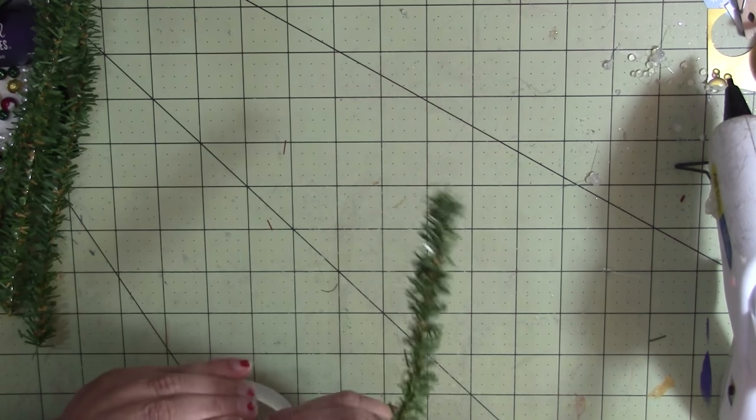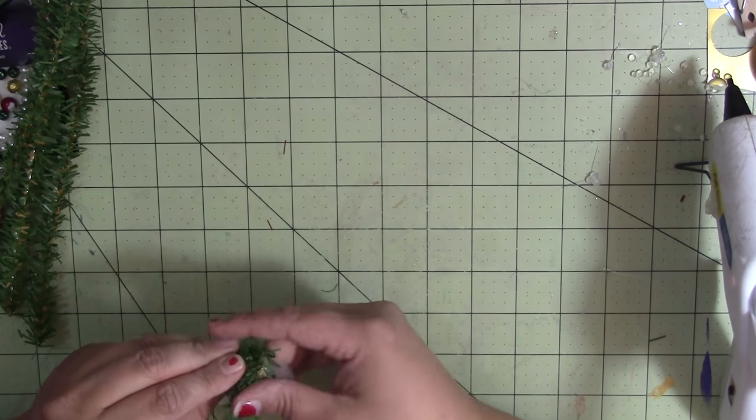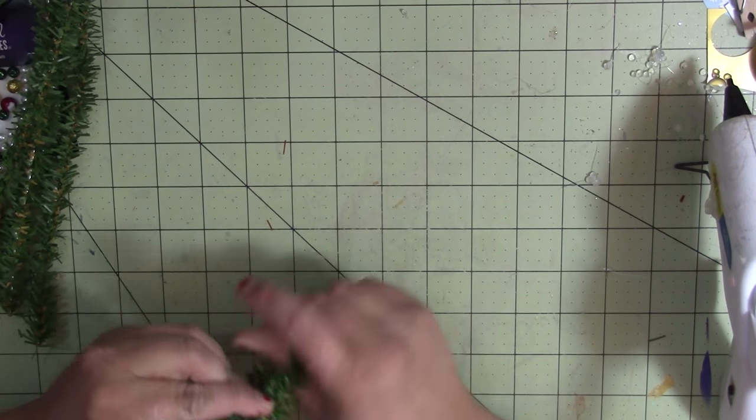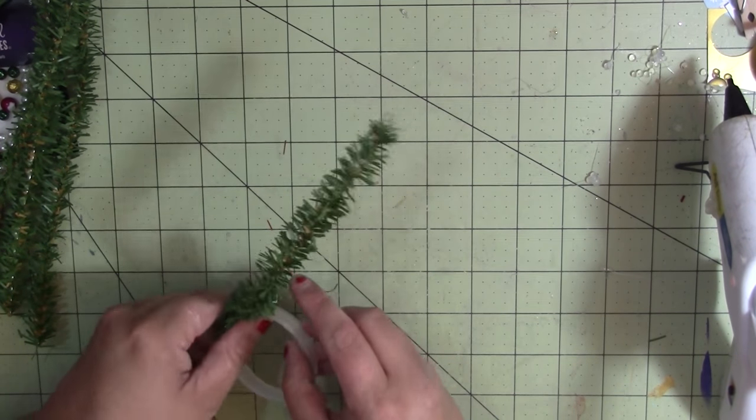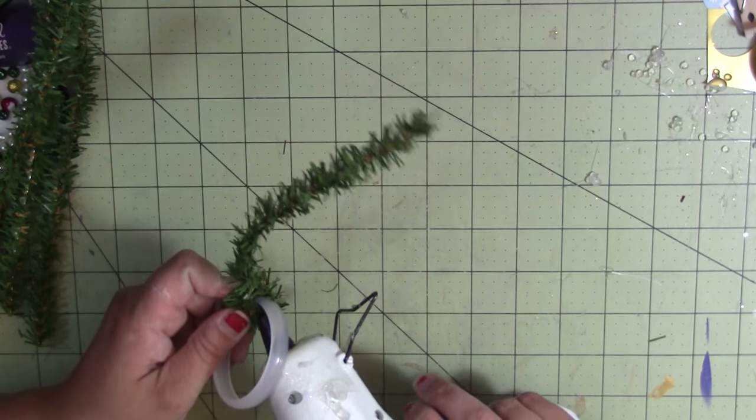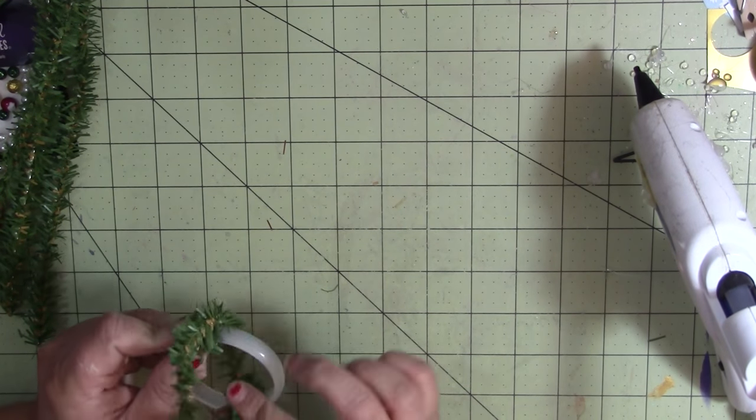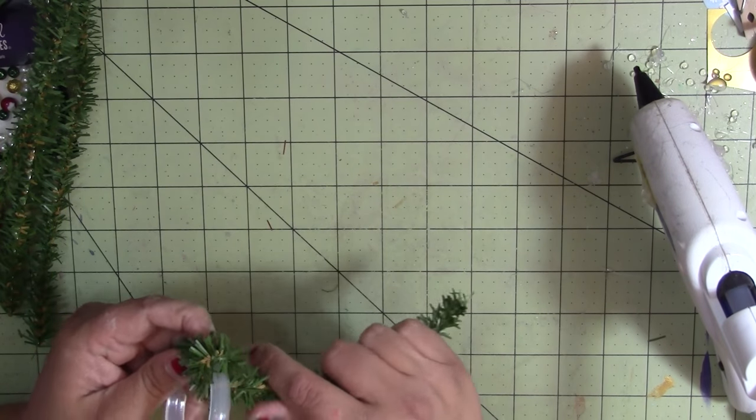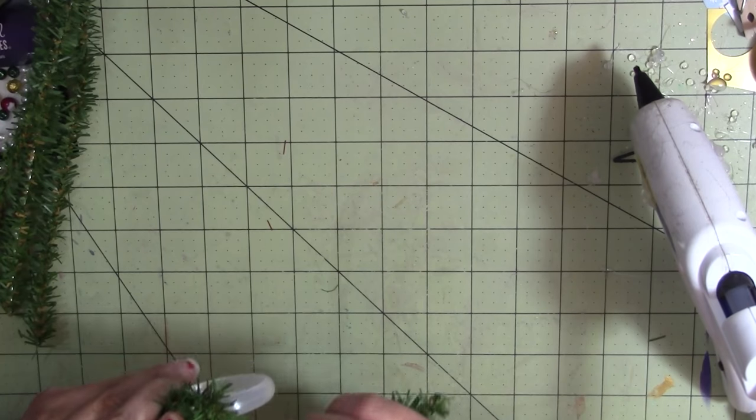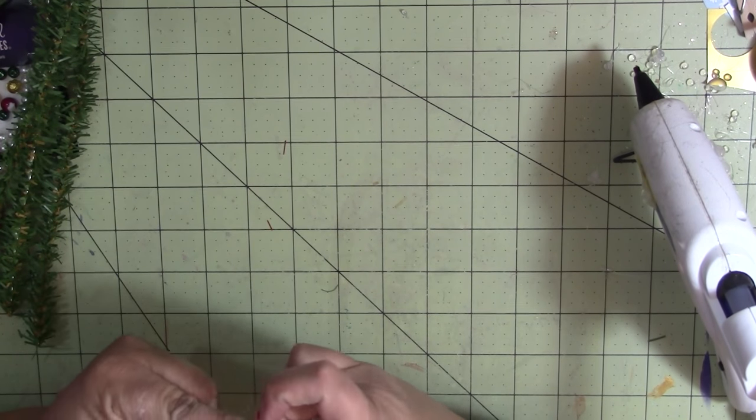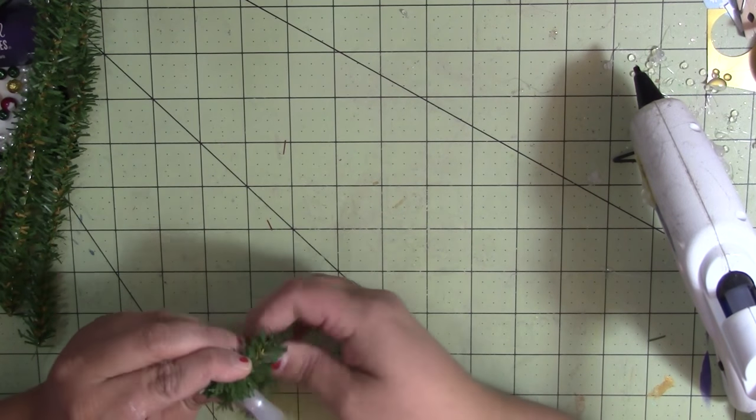I wrap pretty close together because I want a pretty hefty wreath, nice and full. Every once in a while I come in with a little bit of hot glue. I feed the chenille stem through and just pull it across the glue, hold it for a second till it kind of cools, and then I just keep going.